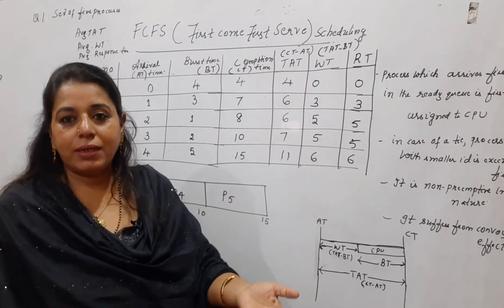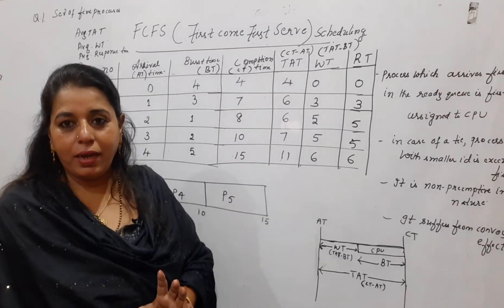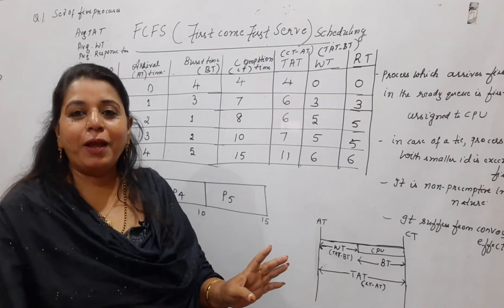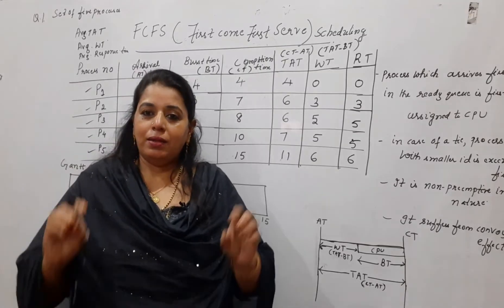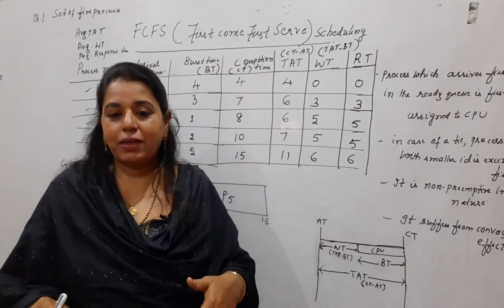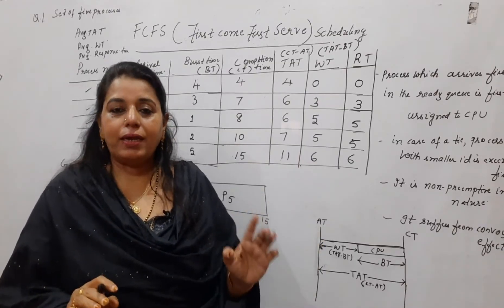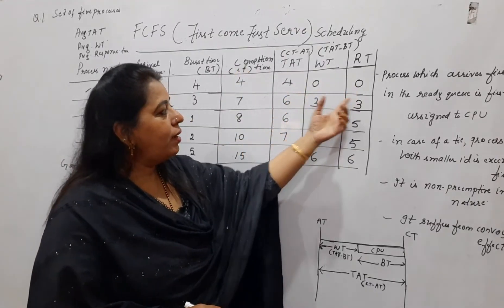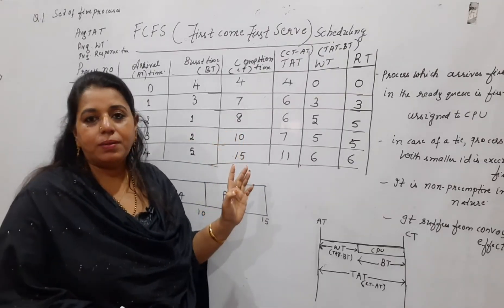You can see that the response time values are the same as the waiting times. This happens wherever the scheduling algorithm is non-preemptive in nature — once you assign the CPU the process completes its job and then the CPU is deallocated. It is like at a billing counter: when a person comes to bill their items, the complete billing is done before the next person begins. That is non-preemptive, and that is why response time and waiting time are always the same in non-preemptive scheduling.